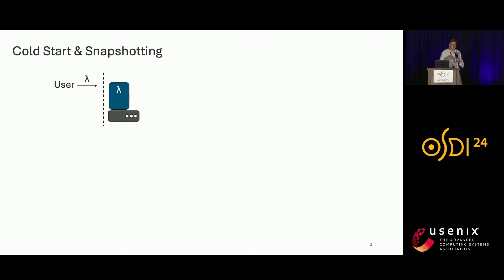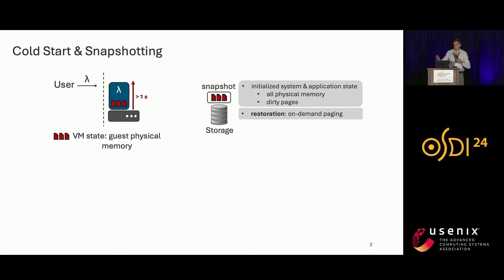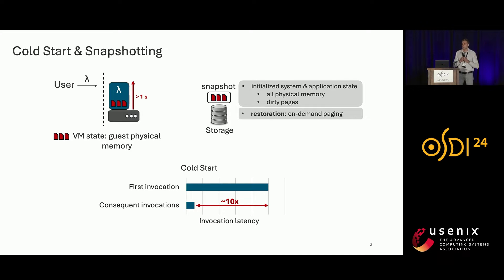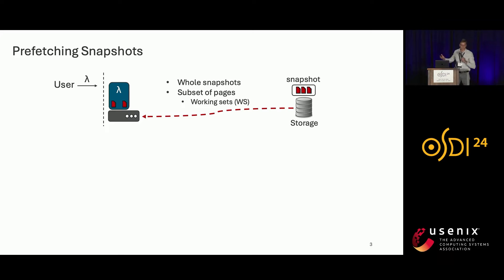Given that micro VMs can boot relatively fast, the software stacks of cloud applications are usually complex and contain many layers that need to be initialized. As a result, the first invocation of serverless functions can take as long as a second. The most common solution is to snapshot the VM state by moving physical pages into storage, and then restore from snapshots through on-demand paging. To further improve this, page prefetching moves pages from the snapshot into the VM upon function invocation, and can cover all pages or a subset such as working sets.